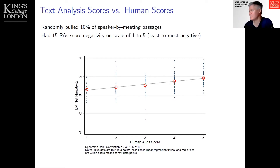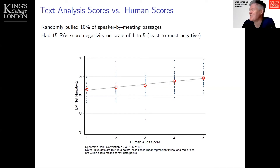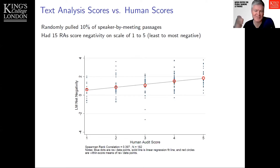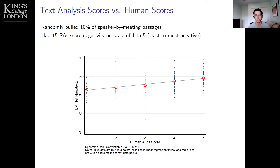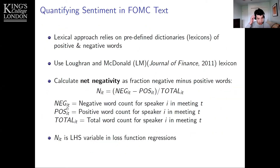Another question asks about the scale of net negativity — does it run from negative to positive? Yes. The net negativity score is just the count of negative words minus positive words divided by the total number of words, so it scales from negative one to positive one.